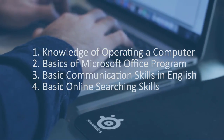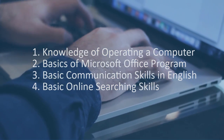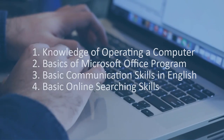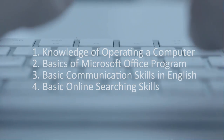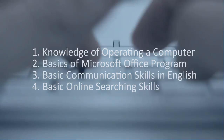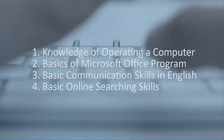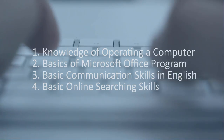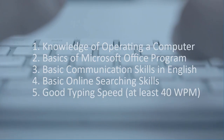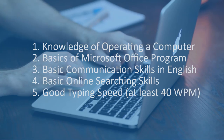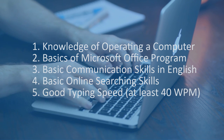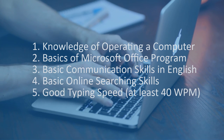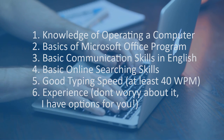The fourth requirement is having basic online searching skills. For example, your client could say, 'I need a list of top restaurants in Atlanta with their name, website, location, and phone numbers,' and you have to find this information online — which is very easy. The fifth requirement is a good typing speed, which will help you get more jobs and complete them efficiently.